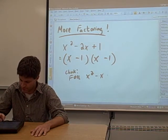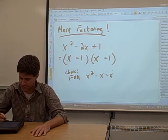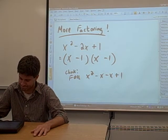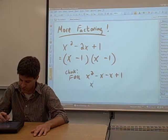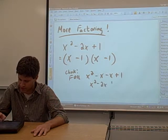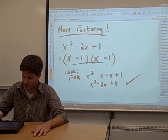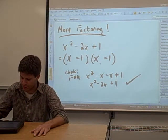Multiply the two inner terms, you get a negative x. Multiply the last two terms and you get a plus one. Combine like terms and you get x squared minus 2x plus one. So that checks out. That's exactly what we wanted to factor. That's exactly what we wanted this thing to foil out to.